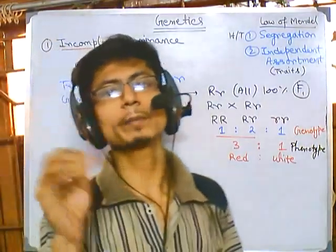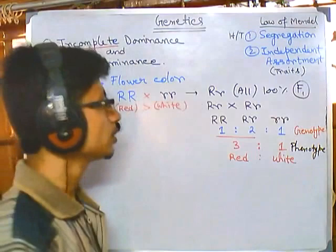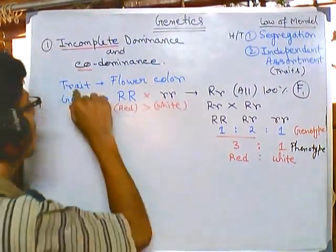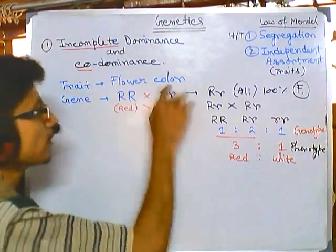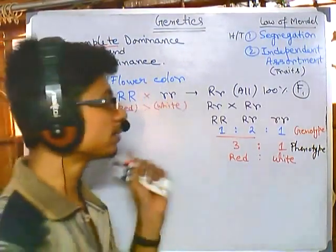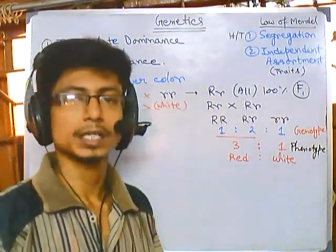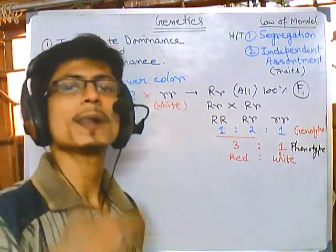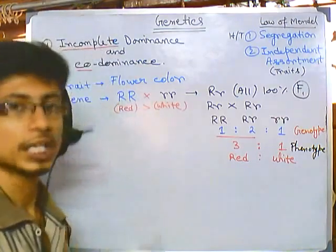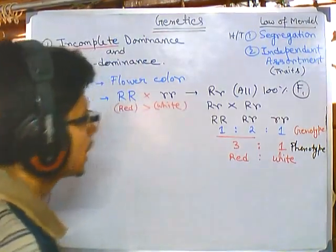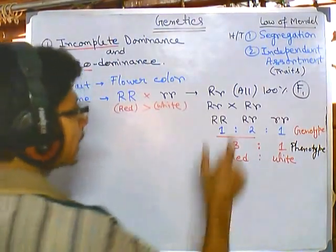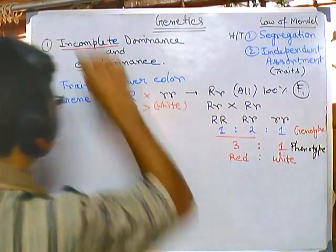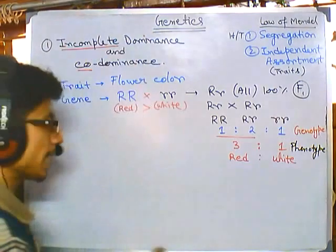A monohybrid cross involves only one trait — here the trait is flower color. If we involve two different traits it is a dihybrid cross; three traits is trihybrid; four is tetrahybrid, and so on. In the case of Mendel, the genotypic ratio is 1:2:1 and the phenotypic ratio is 3:1 for monohybrids. Now let's see what actually happens in the case of incomplete dominance.